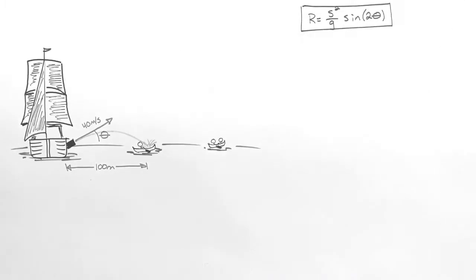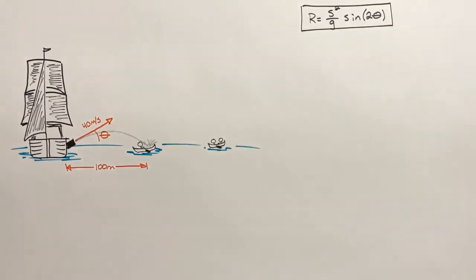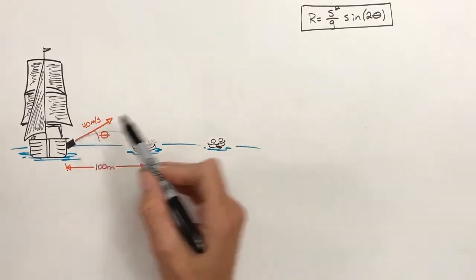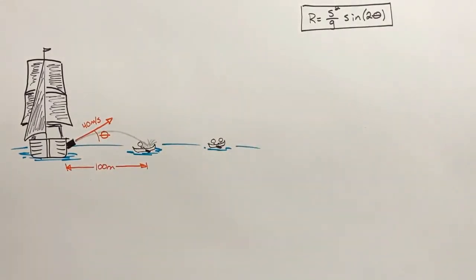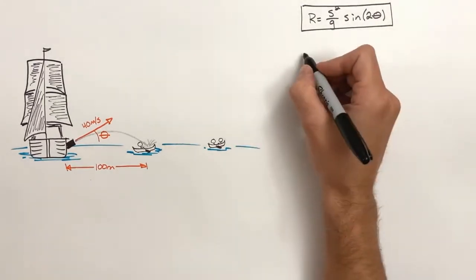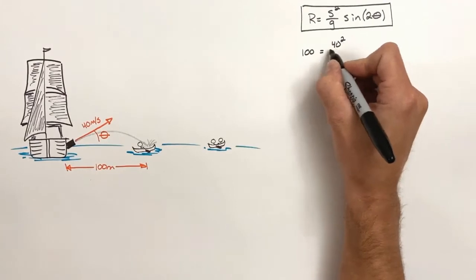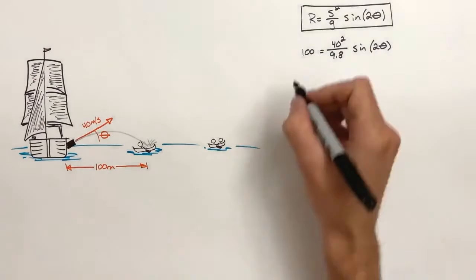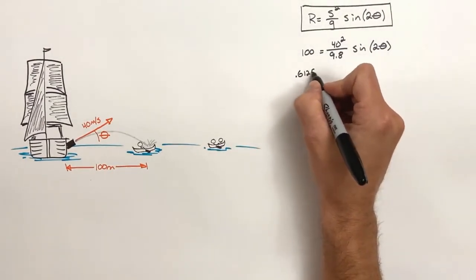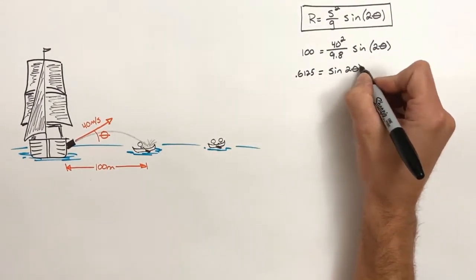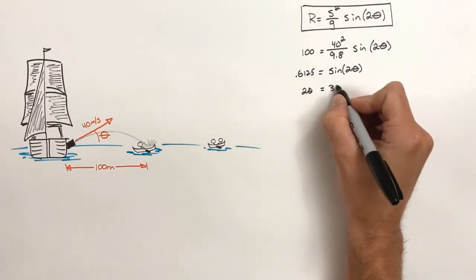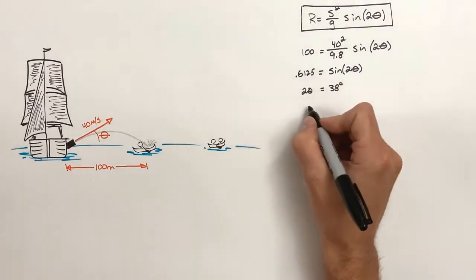If you want to see the derivation of the range equation, there's a link in the corner. We know the distance to the canoe is 100 meters, and the speed of the shell is 40 meters per second. By plugging those values into the range equation, we can solve for the direction which the shell needs to be fired. We plug our values into the range equation and solve for theta. Because of the term sine 2 theta within the range equation, it's important we're careful with our order of operations. In solving for theta, we find that the angle the cannon must be fired to hit the canoe is 19 degrees.